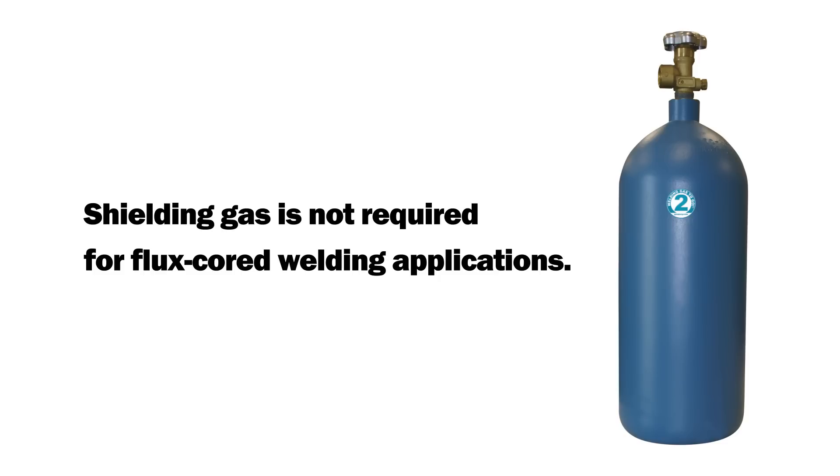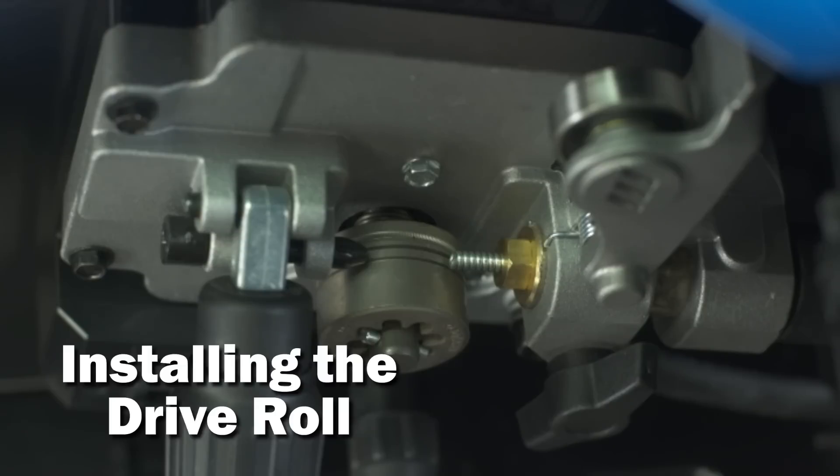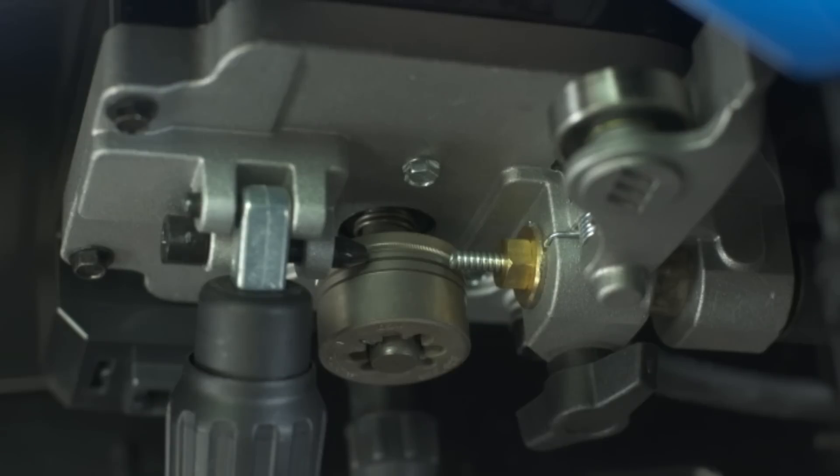Consult your local welding distributor to determine which flux cord wire is best for your application. Now configure the drive roll. The machine ships with the drive roll set for 030 wire. Push in and turn until the pin aligns with the proper groove setting.